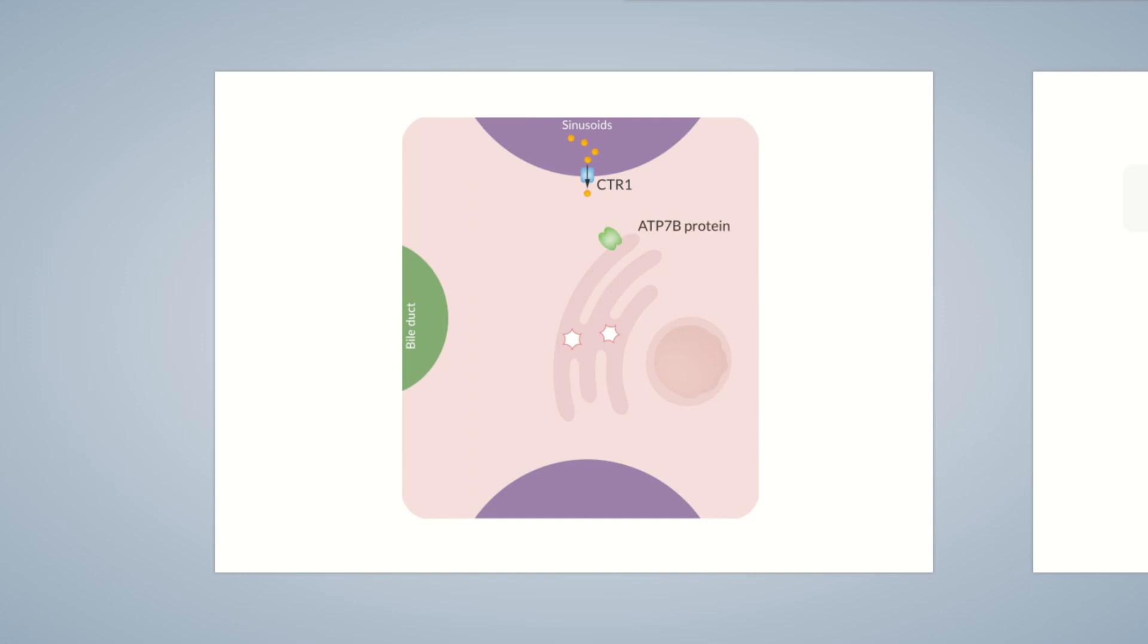The ATP7B protein is an enzyme with ATPase activity and binds to copper. The breakdown of ATP results in the release of energy that is subsequently used to transport copper across the membrane. In the Golgi apparatus, copper ions attach to the binding sites of apoceruloplasmin, which usually binds six copper ions.